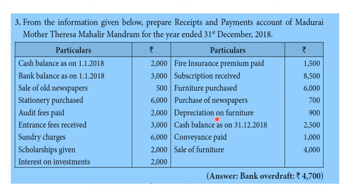Furniture purchased: $6,000. Purchase of newspaper: $700. Depreciation on furniture: $900. Closing cash balance as on 31-12-2018: $2,500. Conveyance paid: $1,000. Traveling expenses. Sale of furniture: $4,000. Balance bank balance: $3,000.